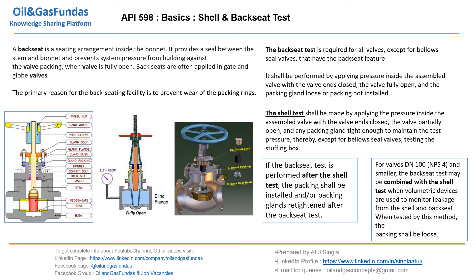During backseat test, we are testing the backseat — shown here in pink — which is the seating arrangement inside the bonnet. The backseat provides a seal between the stem and bonnet. It is located inside the bonnet and its purpose is to seal the stem from the bonnet. This is the key definition to understand what the backseat test is.